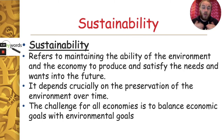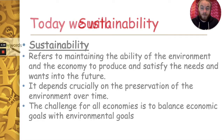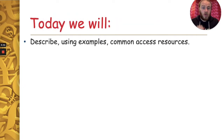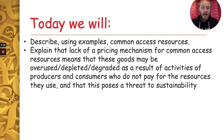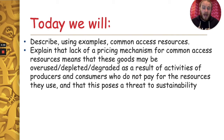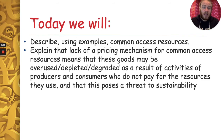So in this video you now know what common access resources are, you know examples of them, and you know that because there's no pricing mechanism — since common access resources are not excludable — consumers and producers can overuse and deplete these resources, which can have a very negative effect on the environment, creating a negative externality that poses a massive threat to sustainability.